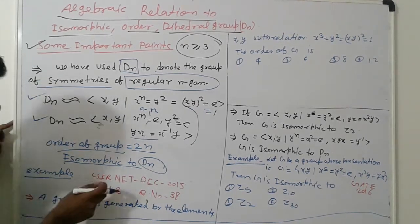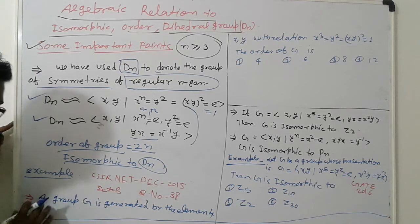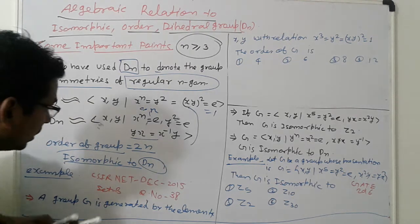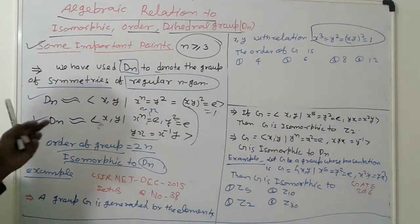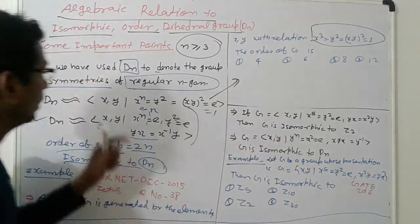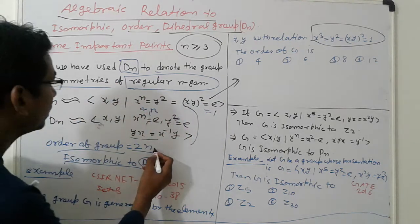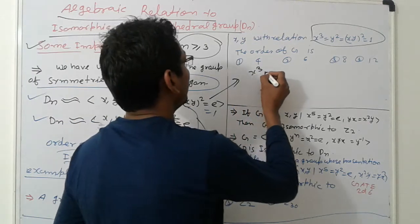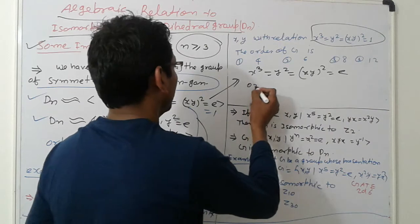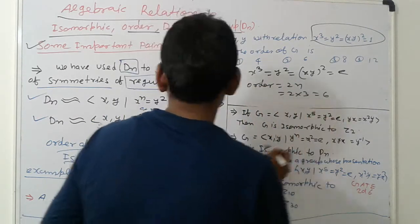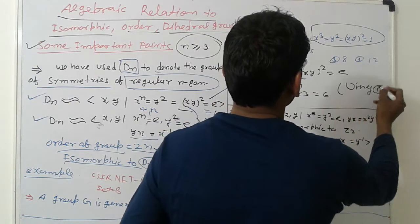For example, come to the problem: CSIR December 2015, Set B, Question 38. A group G is generated by elements x, y with the relation x^3 = y^2 = (xy)^2 = e. What is the order of G? Using the rule, order equals 2n, so here 2 × 3 = 6.